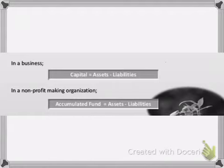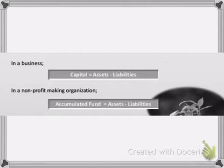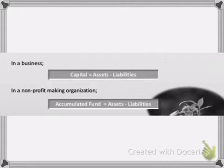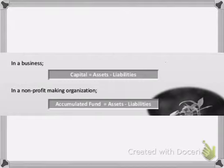For a club there is no capital involved — capital is replaced by accumulated fund. A club is started with funds accumulated from different sources such as donations and membership fees paid by different members. Since all the funds are accumulated from different sources, we call it accumulated fund. For a club, the accounting equation changes: instead of Capital = Assets minus Liabilities, you have Accumulated Fund = Assets minus Liabilities. The examiner could ask you to calculate accumulated fund, in which case you simply use: assets minus liabilities.